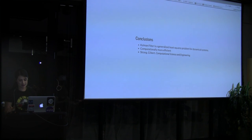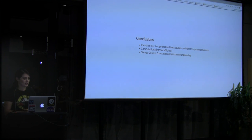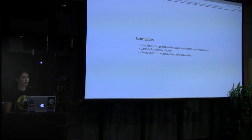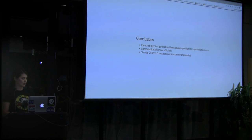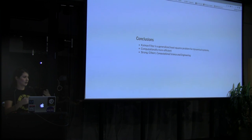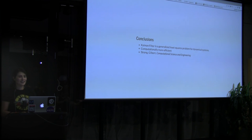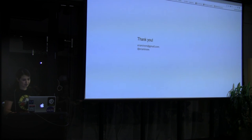In conclusion, the Kalman filter is generally a least squares solution for dynamical systems — systems that evolve in time — and is computationally more efficient than other solutions like the Wiener filter. If you want the textbook or classroom version of the Kalman filter, I strongly recommend the book Computational Science and Engineering by Gilbert Strang. He is an amazing professor. Find that chapter and get the classroom version.